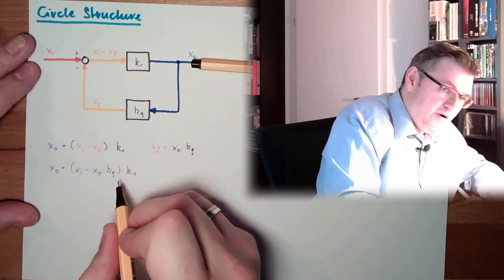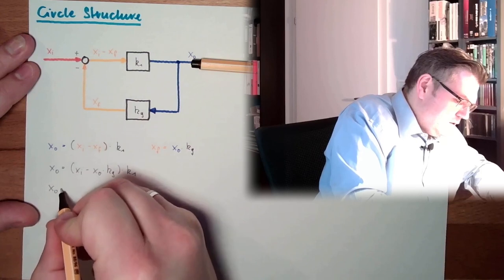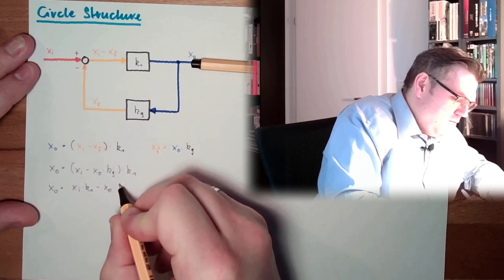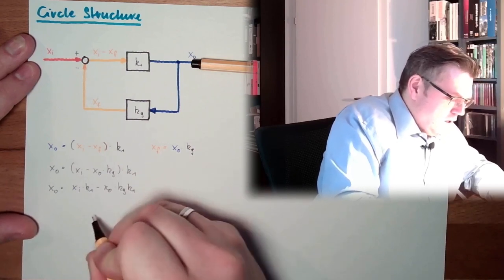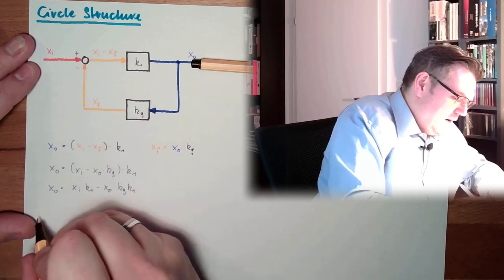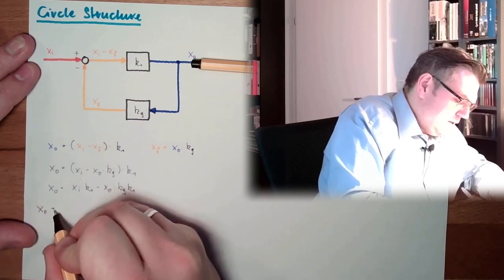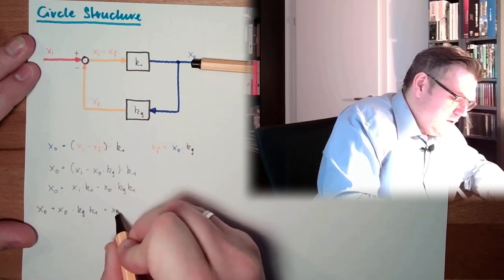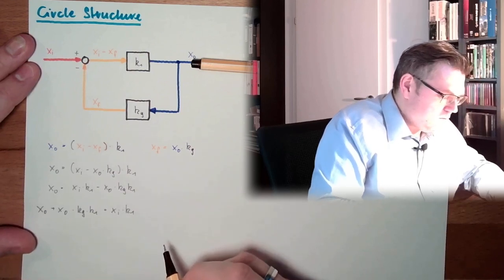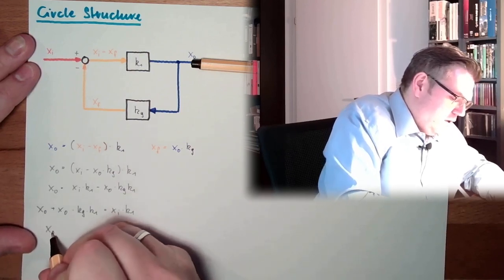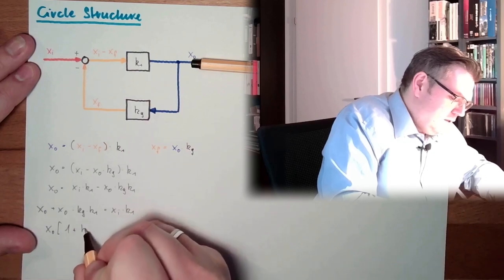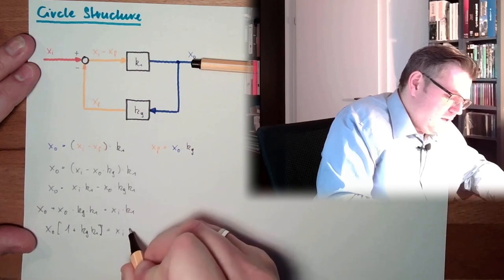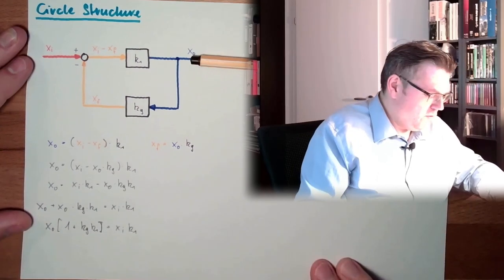And now I separate the variables. So I bring this in. XO equals XI multiplied by K1 minus XO multiplied by KG K1. Bring it to the other side. XO plus XO multiplied by KG K1 equals XI K1. Now I get out XO here. 1 plus KG K1 equals XI K1. Yeah, looking already pretty promising.